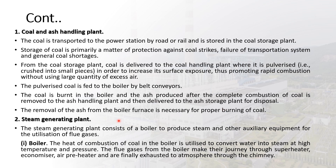The removal of ash from the boiler furnace is necessary for proper burning of coal. Next is the steam generating plant. The steam generating plant consists of a boiler to produce steam and other auxiliary equipment for the utilization of flue gases.